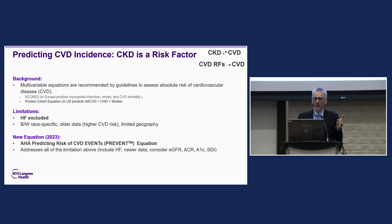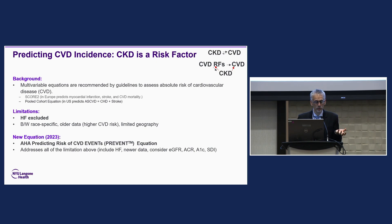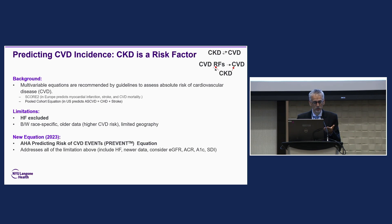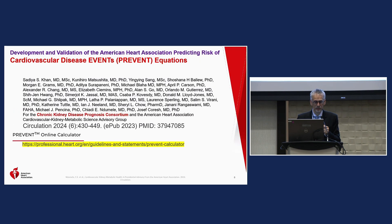Switching to the other side — looking at kidney disease as a risk factor for cardiovascular disease — complicated by the fact that kidney disease aggravates things like hypertension, and hypertension and diabetes aggravate kidney disease. It's really a triangle of causes. Multivariable equations are recommended by the guidelines. We've got SCORE2 mainly used in Europe with a kidney disease add-on. The pooled cohort equation was used in the U.S., but limitations included: heart failure excluded, Black-White race-specific coefficients, older data, and limited geography. We wanted to do a new equation to overcome all of that and add new variables.